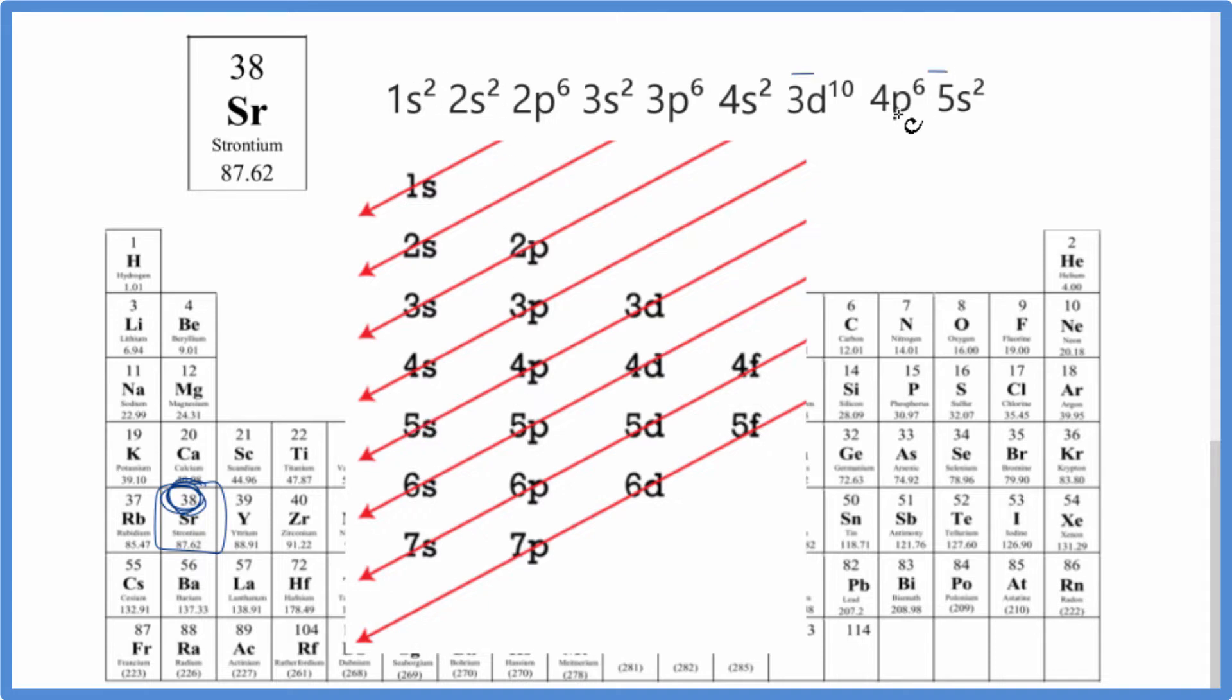And if you add the numbers up again, you'll get 38. So this is the electron configuration for just strontium.